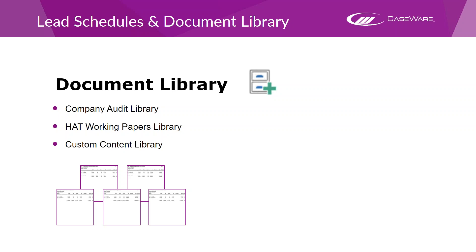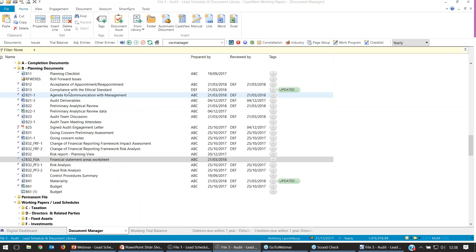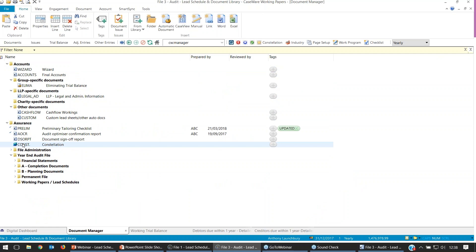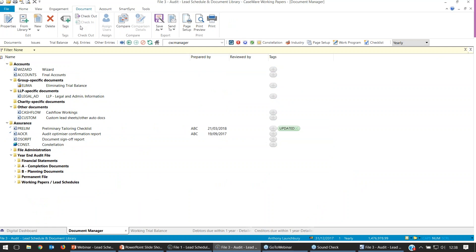The document library can be quite useful. To access it, go on your toolbar to Document, select Document, and you'll see the library icon. If you select the drop-down below, it will ask if you'd like to open the Company Audit library, the default document library, or the HAT working papers one. Selecting the library button itself opens the document library screen where you can select each library. Mine's on the Company Audit one, so we'll start there.